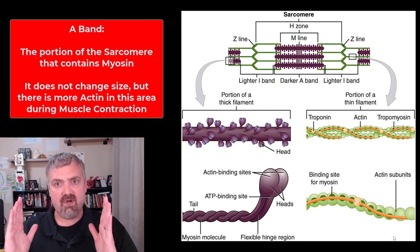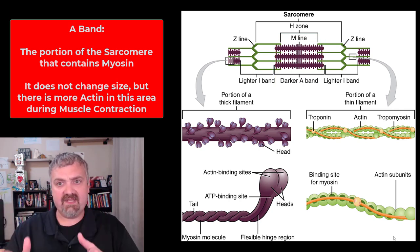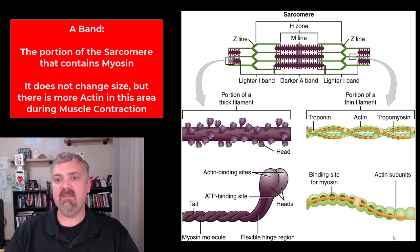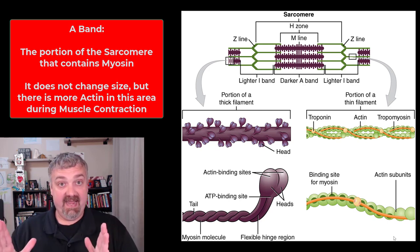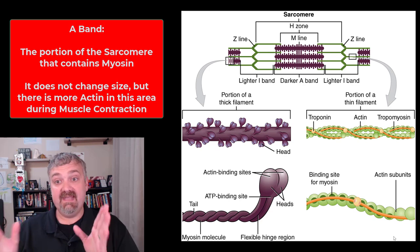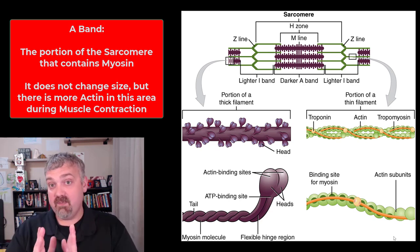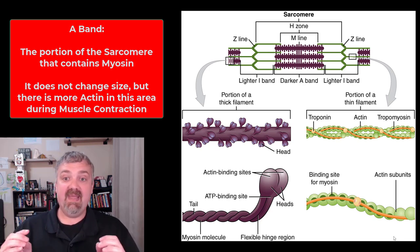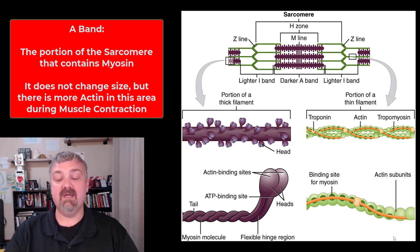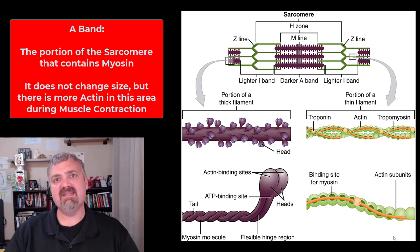Alright, so to recap: a sarcomere runs from Z line to Z line — that's where actin is anchored. The M line in the middle is where myosin is, right in the middle, and that's where we have our thick filaments. The A band is the full length of myosin and will not change with contraction. The H zone — the area where there's only myosin — will get smaller with contraction. And the I bands will also get smaller with contraction as actin is pulled towards the center of the sarcomere. Those are the parts of the sarcomere; we'll talk about their function in a separate video. Hope this helps — have a wonderful day, be blessed.